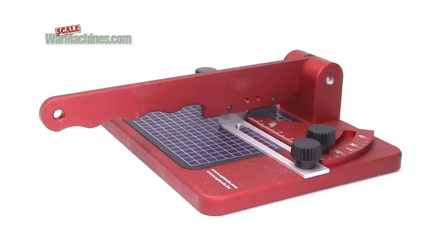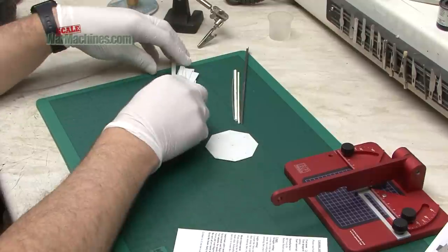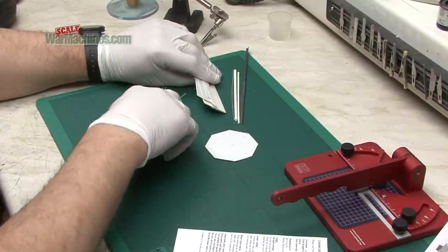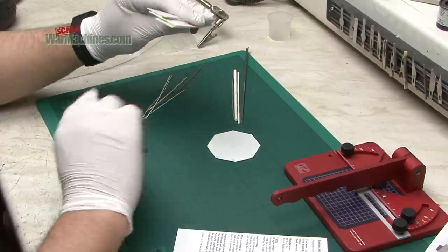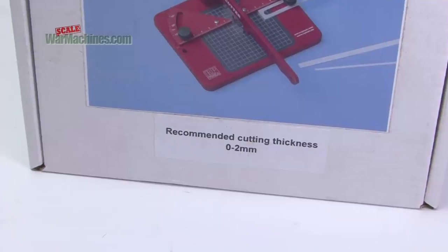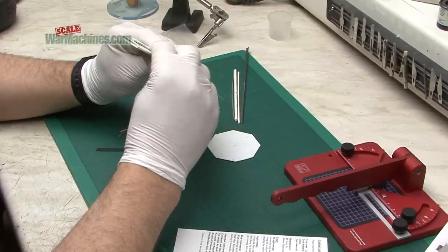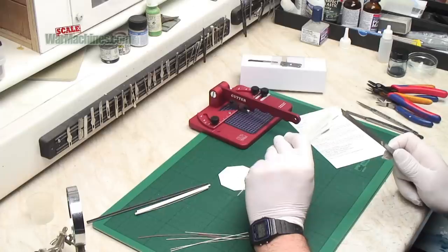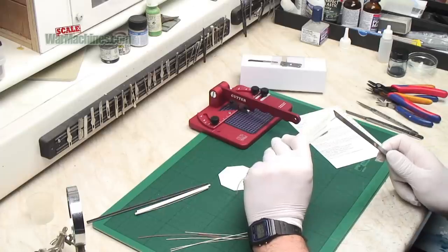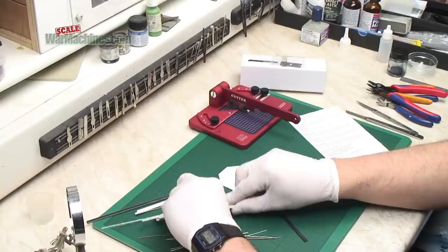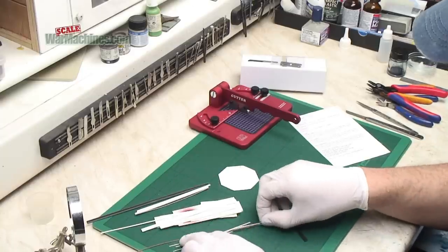To test the tool we've got a selection of different types and shapes of PlastiCard or plastic materials. First up we've got different thicknesses up to and beyond the maximum thickness that's recommended which is two mil worth of plastic. To test it out then we'll be using these. You can see that we've gone up to two mil.